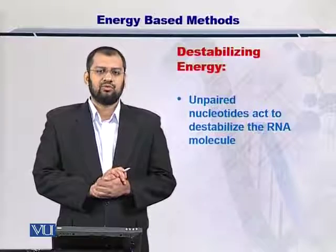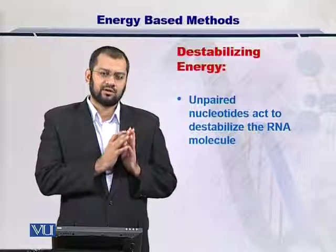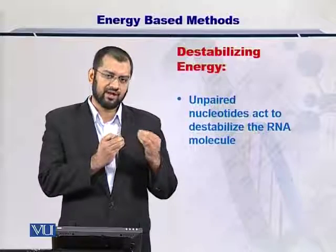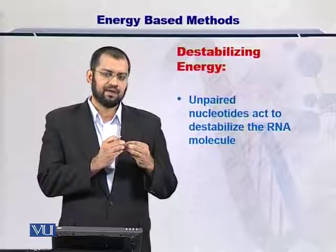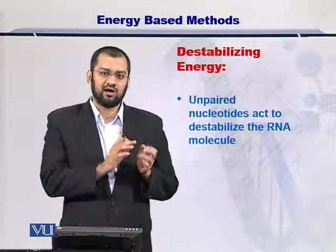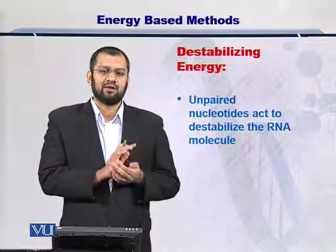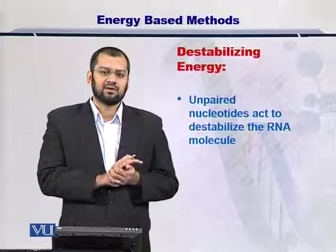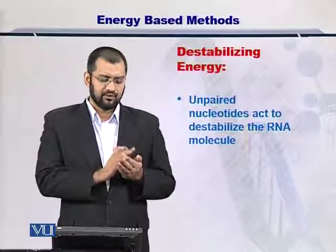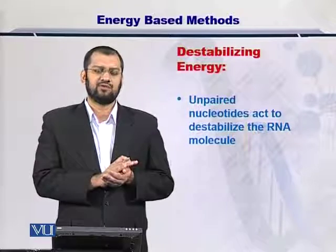One thing that you may need to factor in is the destabilizing effect. In this discussion, we have only looked at the energy that is given out as a result of coupling between A and U or G and C or vice versa. However, there are some nucleotides — such as nucleotides in the eye of the hairpin or nucleotides in the bulge — that are not coupled. These uncoupled nucleotides tend to make the RNA structure unstable, so we may want to look at the instability introduced by such nucleotides as well.